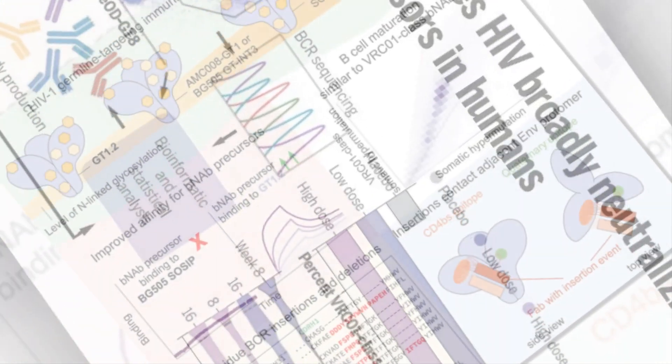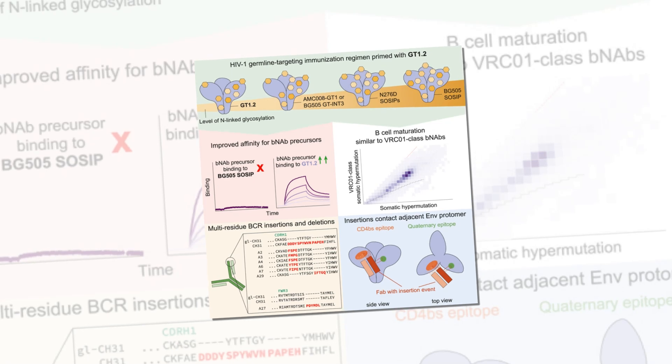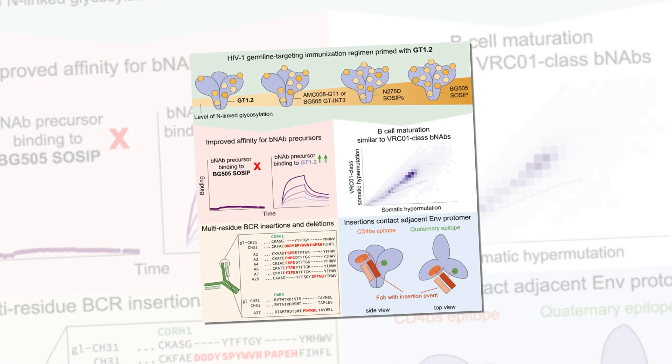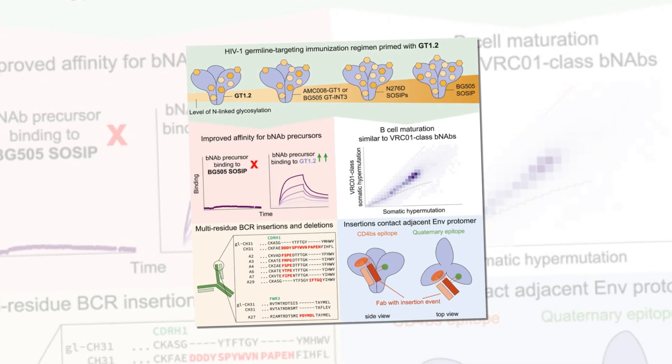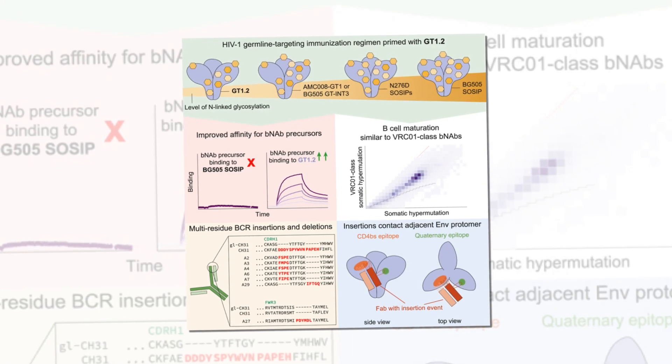By utilizing the messenger RNA (mRNA) technology used for COVID-19 vaccines, scientists can produce these tailored booster vaccines faster.